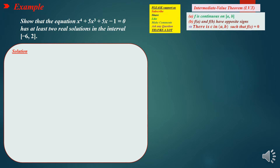Hi everyone. In this video we have one example: show that the equation x to the 4th plus 5x cubed plus 5x minus 1 equals 0 has at least 2 real solutions in the interval from negative 6 to 2.